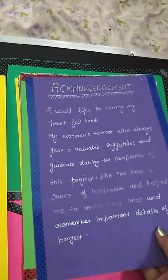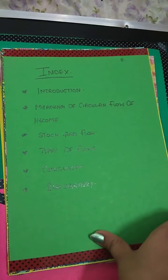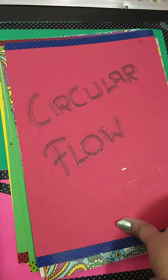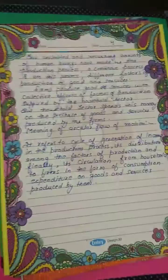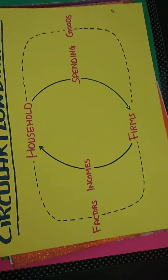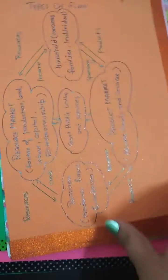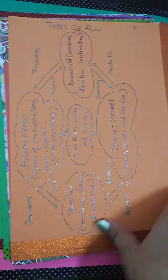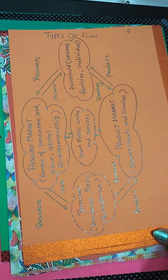The first page introduces the acknowledgement and index. Then comes circular flow with details, a circular flow diagram, and types of flow. I have decorated the sheets with different kinds of tapes, as you can see.